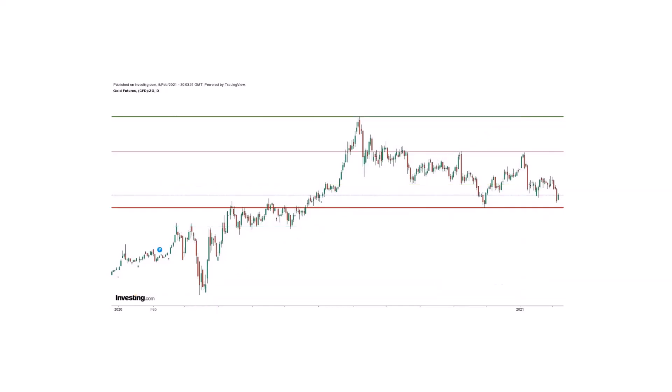There is one more interesting thing in this chart. I have taken the low and high of the correction. Considering just this portion, it looks like a downtrend. Fibonacci retracement is placed here with high as one and low as zero. The resistance is near the 61.8% retracement, and gold prices are not able to cross this resistance. As previously discussed, when a resistance is tested multiple times it becomes weak, and one can look for a buying opportunity after this resistance is broken — that would be an even better buy signal.